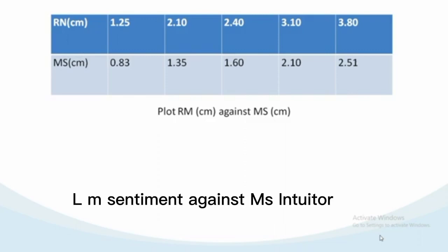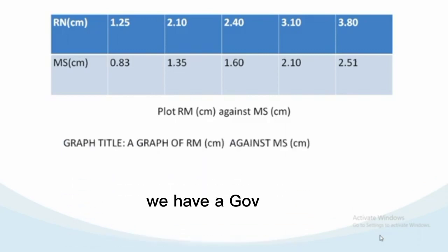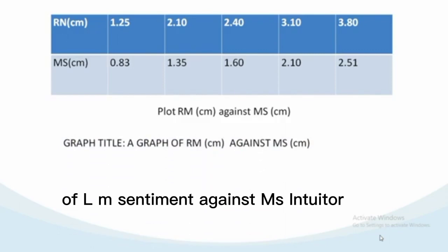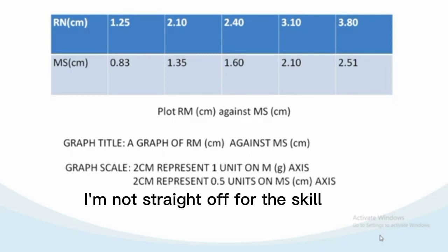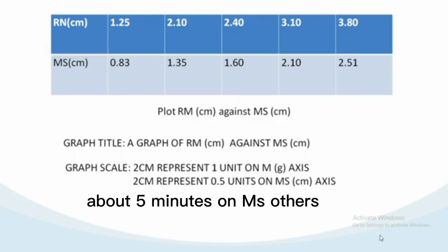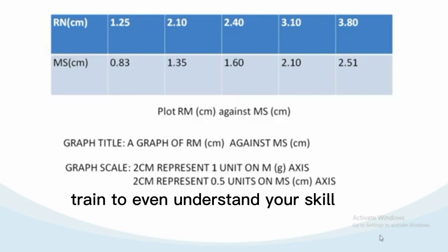We have: A graph of RM in centimeters against MS in centimeters. We also have for the scale: two centimeters represent one unit on MS axis, and two centimeters represent 0.5 units on MS centimeters axis. This is the best way to pick out a scale for your graph. Trust me, this practical, if you understand your scale very well, you are having your examination.